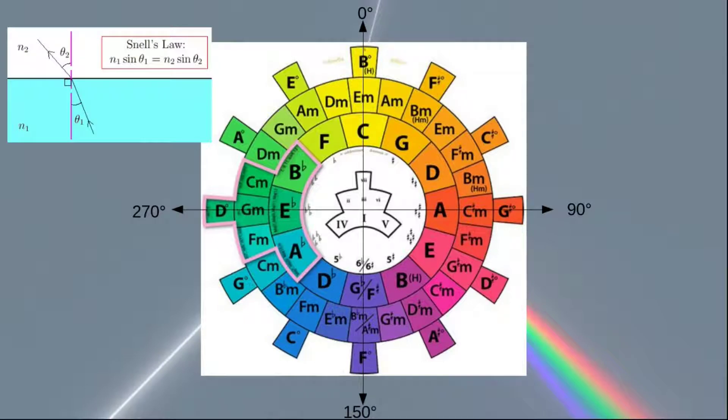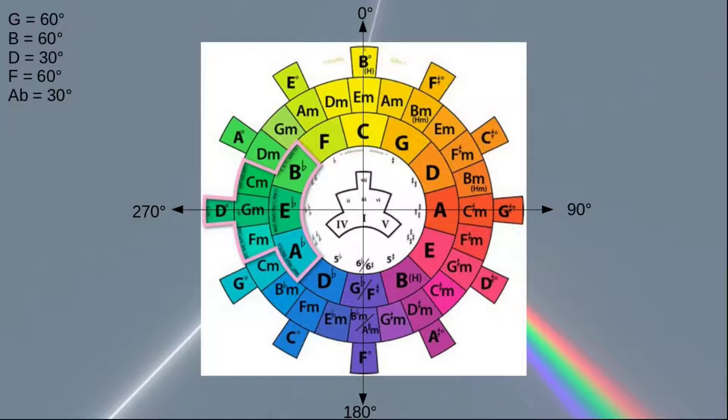Using Snell's Law, the note G can be given the value of 60 degrees. Even though it's at 30 degrees on our wheel, remember we have to measure how far it is from the y-axis, not the x-axis.